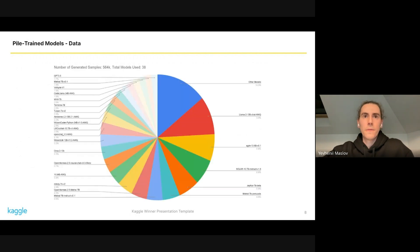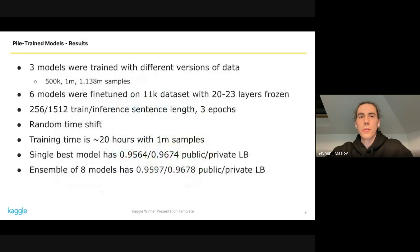We generated 560,000 samples this way. You can see the distribution of models we used - we mainly used small models, 7 or 13 billion parameters, but I assume you can improve the discriminator score by training it on samples from larger models. For models 13 billion parameters and larger, we used AWQ quantization.